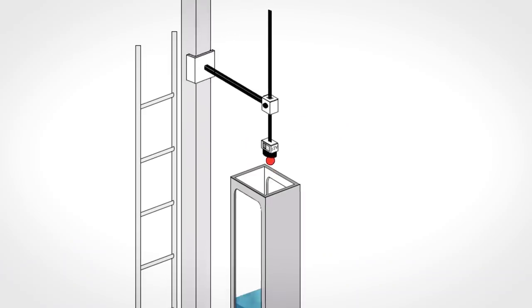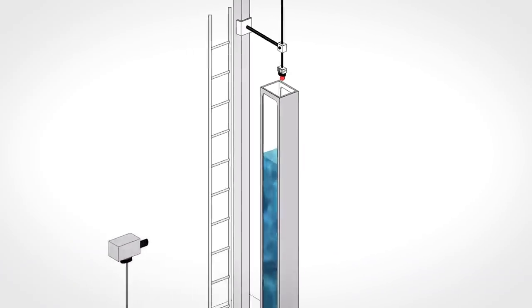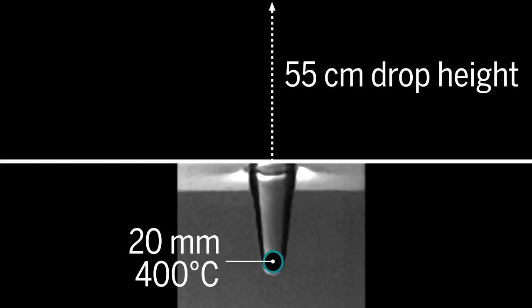The balls are then placed at specific heights above a deep tank. Here, a 20mm steel ball preheated to 400 degrees celsius is dropped at a height of 55cm into 95 degree water.